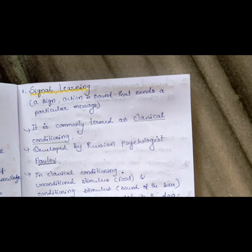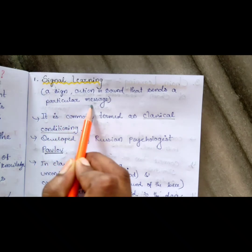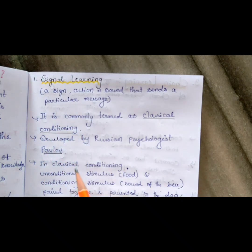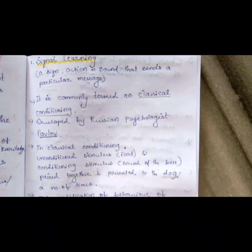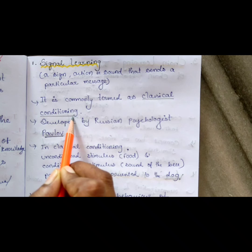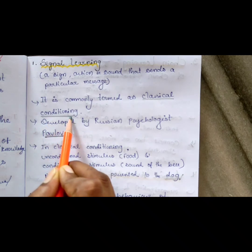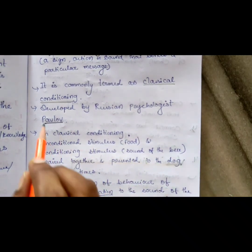The first type is signal learning. A signal means a sign, action, or sound that sends a particular message. Signal learning is also called classical conditioning. This was developed by the Russian psychologist Pavlov.